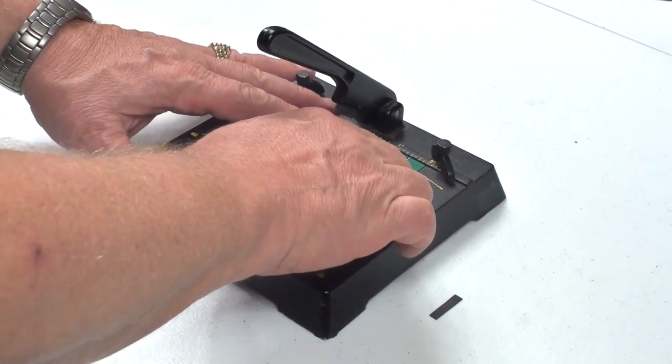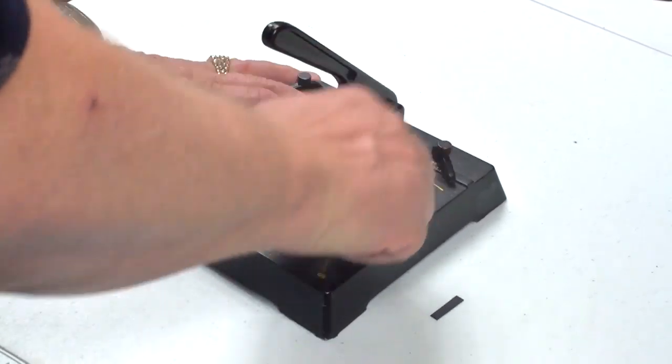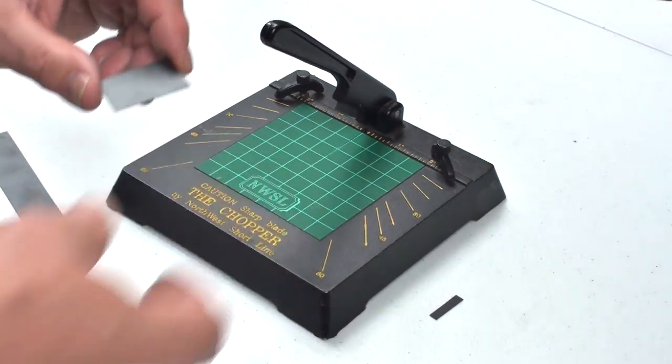And then I'm going to cut to about an inch and three-eighths long just so that I have a piece that will be smaller than the blade in the chopper.